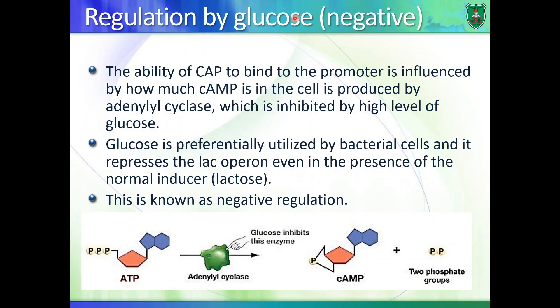Cyclic AMP production is regulated by glucose. Glucose induces negative regulation — the opposite of lactose — meaning if there is glucose, the lac operon should not be active. This makes sense: if bacteria have both lactose and glucose, they would prefer to metabolize glucose, because you first have to hydrolyze lactose into two monosaccharides. If glucose is already present in the cells, there is no need to produce a lot of beta-galactosidase.